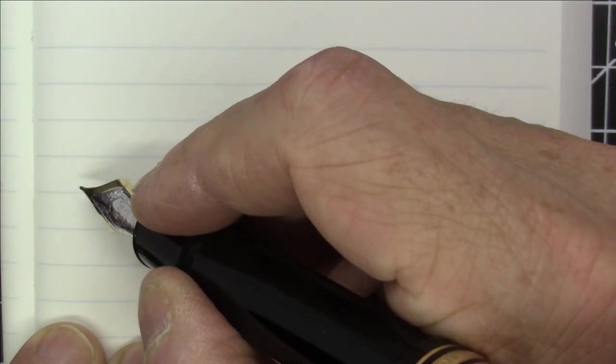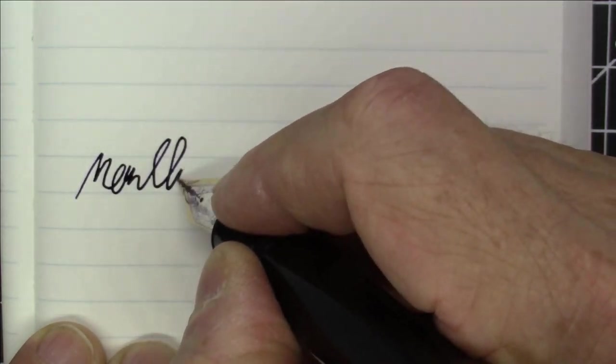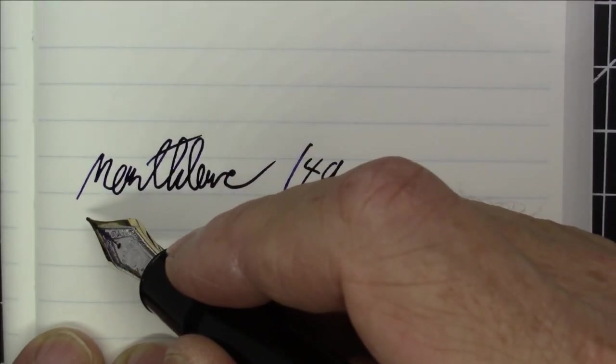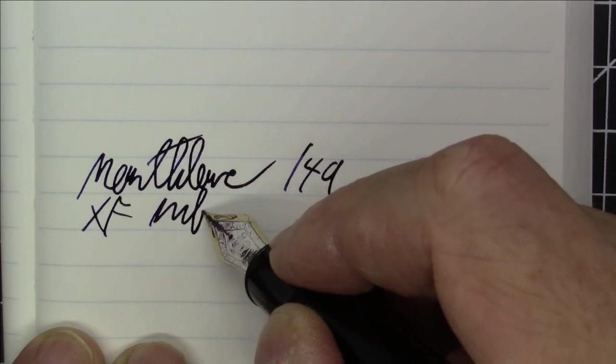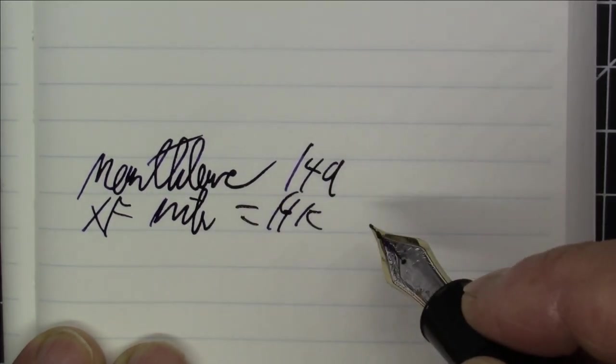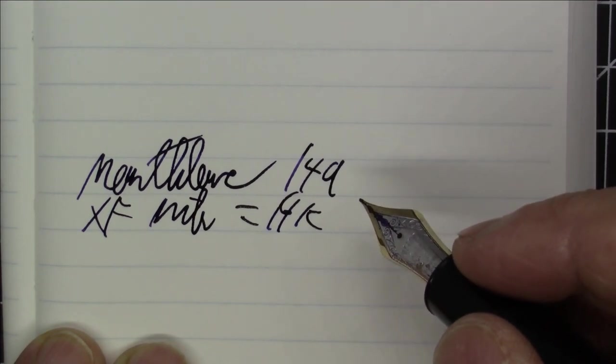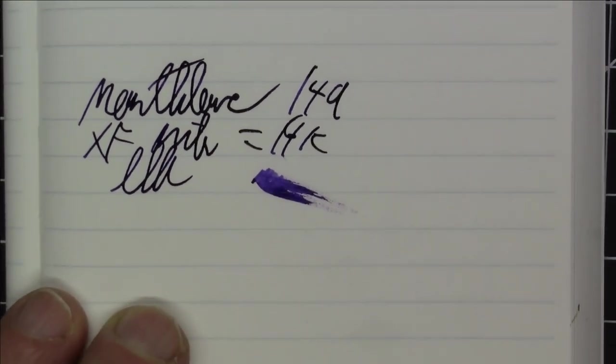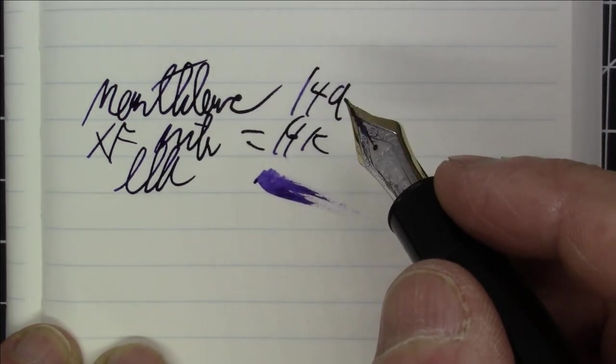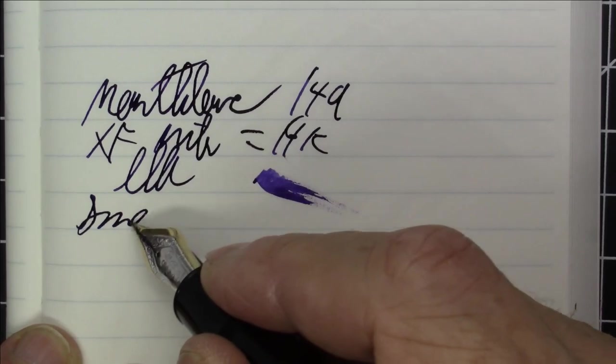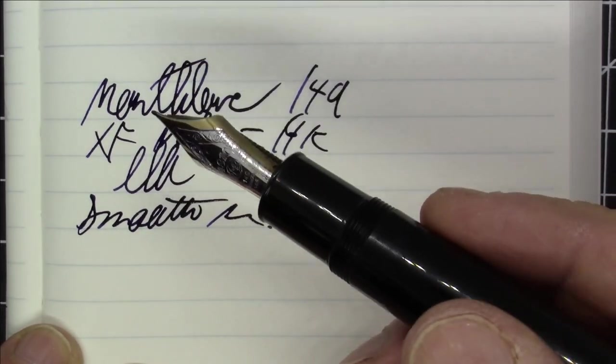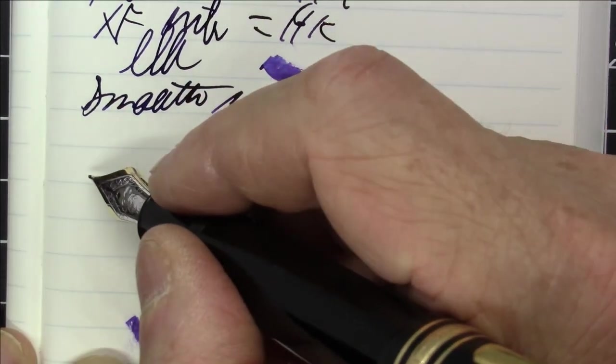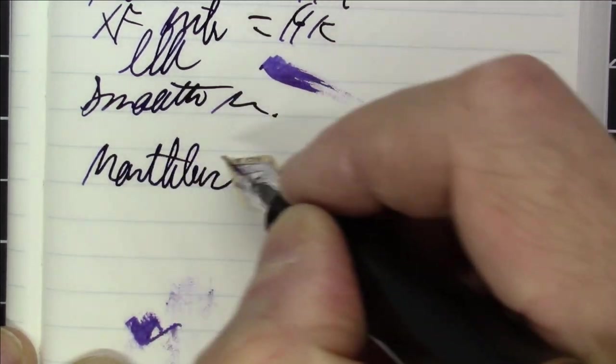All right, folks, what we're writing with here is a Montblanc Model 149. And this has an extra fine nib in 14 carat. And it really writes beautiful. It's definitely a wet writer. It definitely is on the wet side, which is fine for me, especially since it's such a fine point nib. It's quite smooth, has great flow. So I really like the way this pen writes. Beautiful writing pen. In terms of ink, this ink is also from Montblanc.